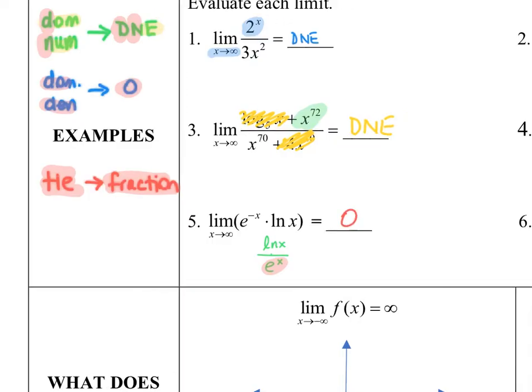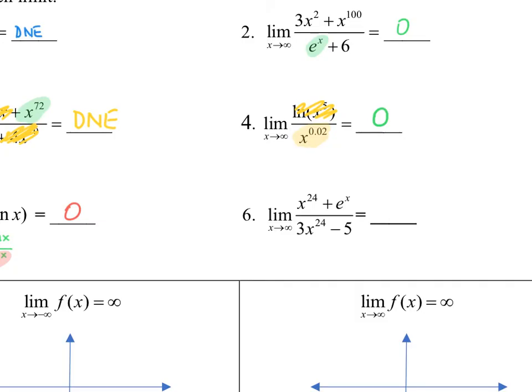For question number six, make sure you look at all the terms in the numerator and denominator, because it's tempting to see a match and think the answer is one-third. However, this x to the 24th isn't even going to show up when paired with that e to the x — it isn't going to do anything. I really need to pay attention to the e to the x; it's going to dominate everything. So a dominant numerator gives me an answer of DNE.